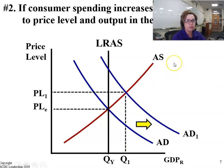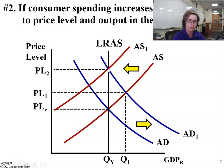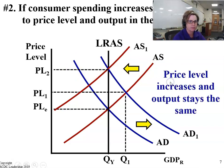If consumer spending increases, what happens to the price level and output in the long-run? In the long-run, aggregate supply is going to shift to the left as workers negotiate for higher wages. So we're going to have the same output in the long-run, but at a higher price level — price level increases, yet our output stays the same.